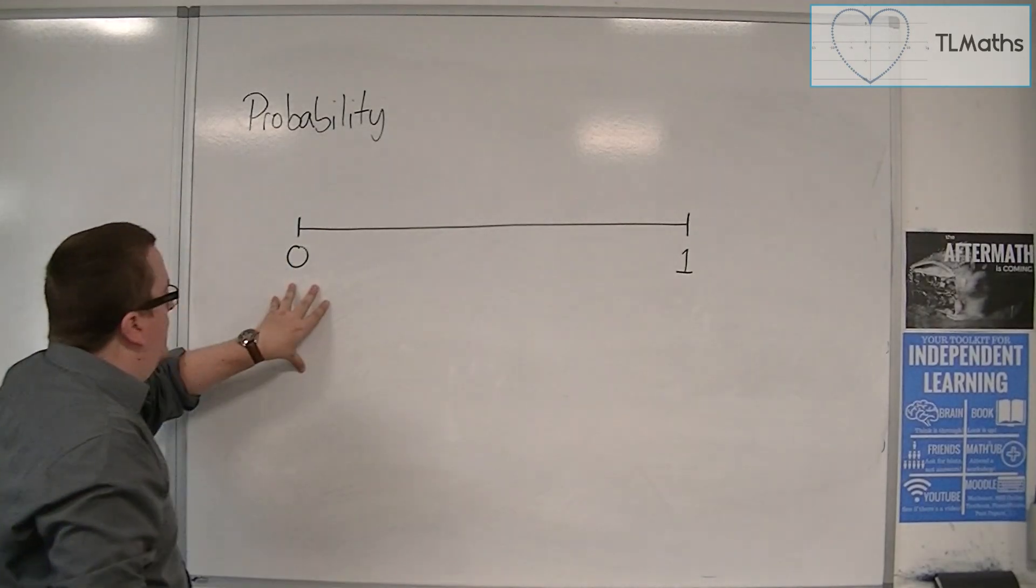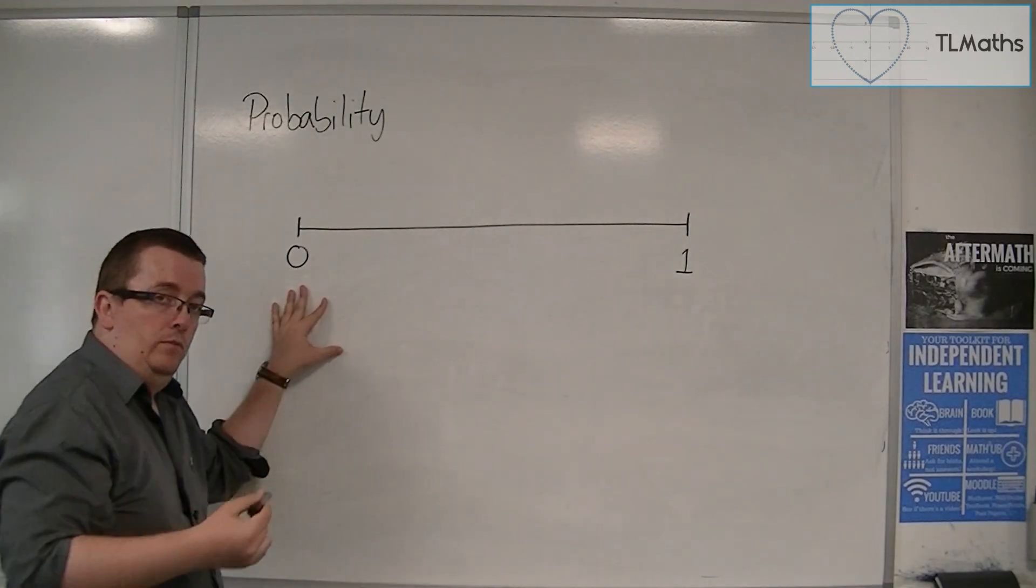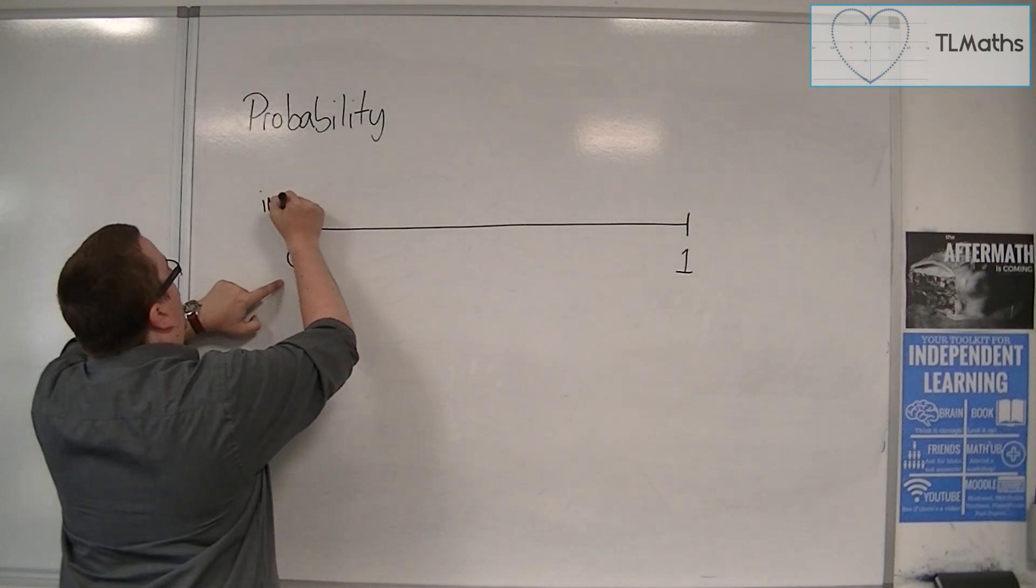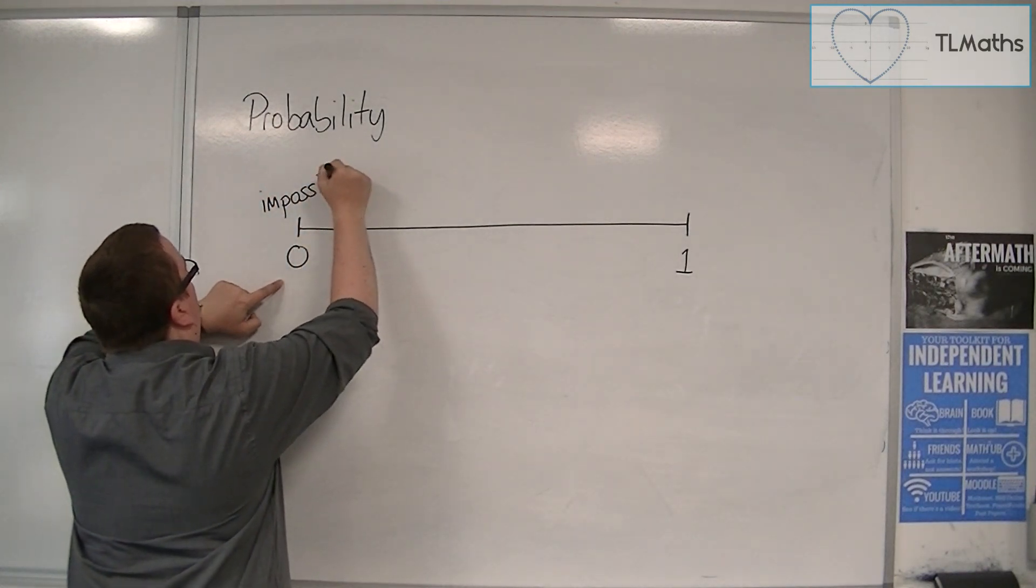0 is considered to be impossible. If something has a probability of 0, it can never happen.